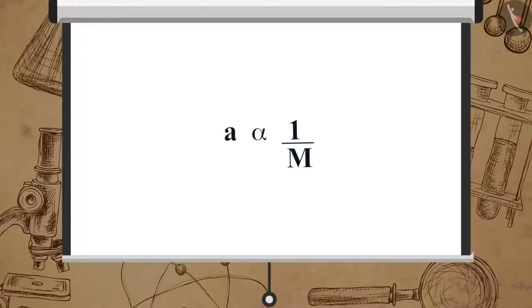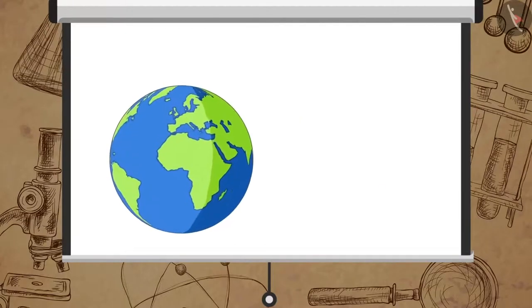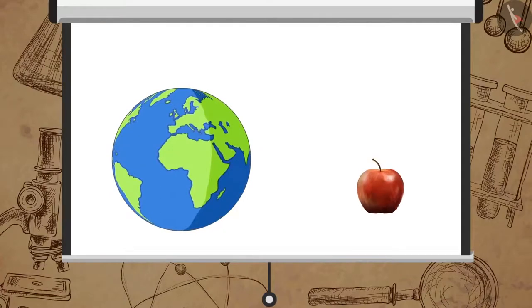It is because according to the second law of motion, acceleration is inversely proportional to the mass of an object. The mass of an apple is negligible compared to the mass of the earth.